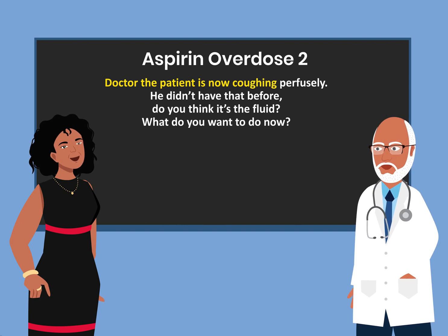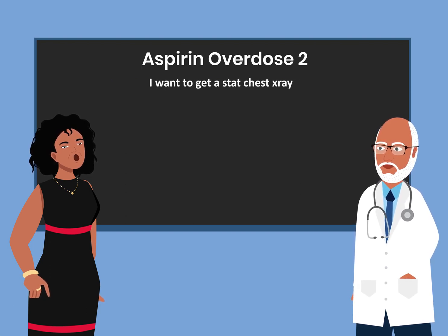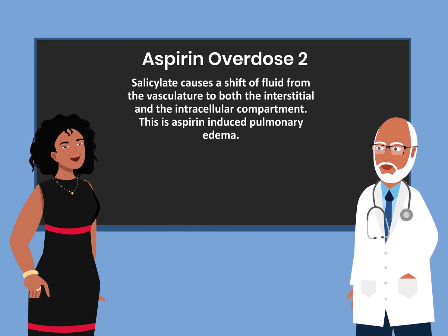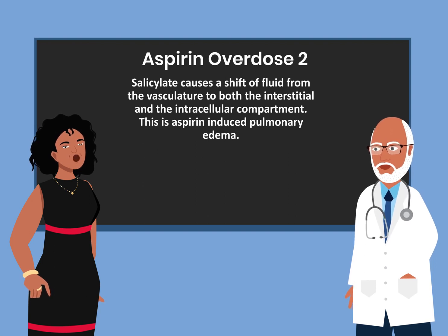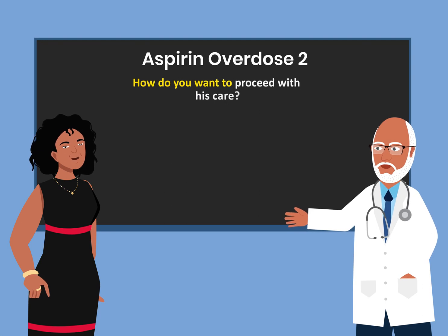The patient is now coughing profusely — a new symptom. A stat chest x-ray shows pulmonary edema. Salicylate causes a shift of fluid from the vasculature to both the interstitial and intracellular compartments, resulting in aspirin-induced pulmonary edema.